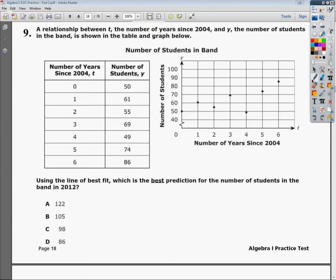The reality is, they're showing you not years in the list for X or in the first section of the table. Instead, they're showing you years since 2004, which means that this would be 2004. This would be 05, 06, 07,